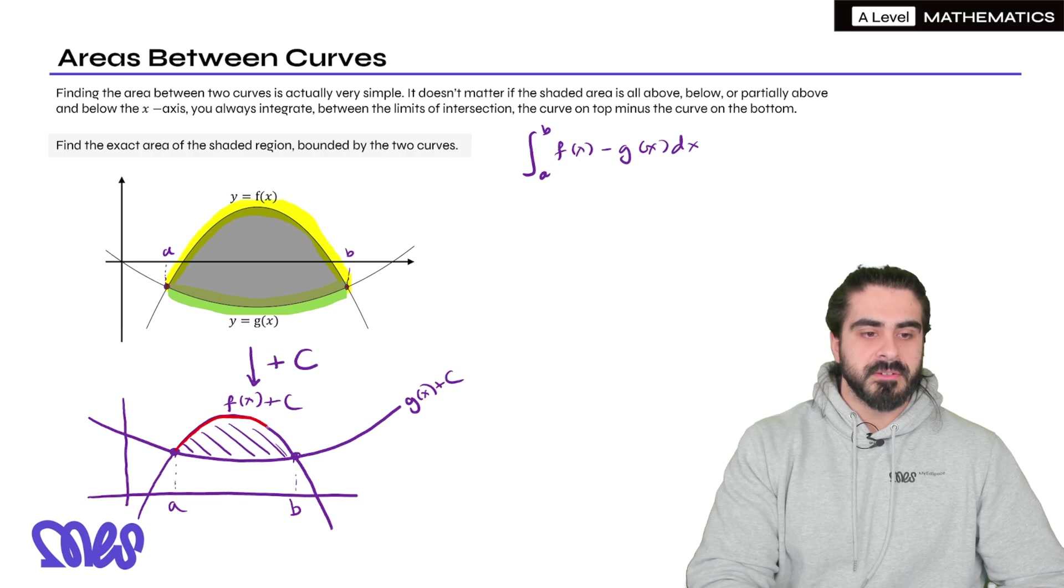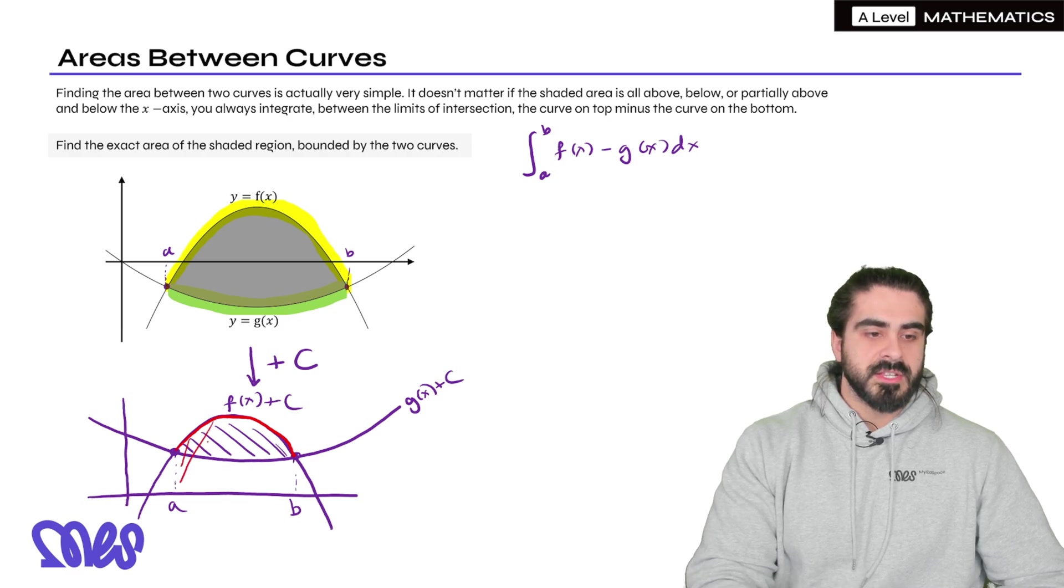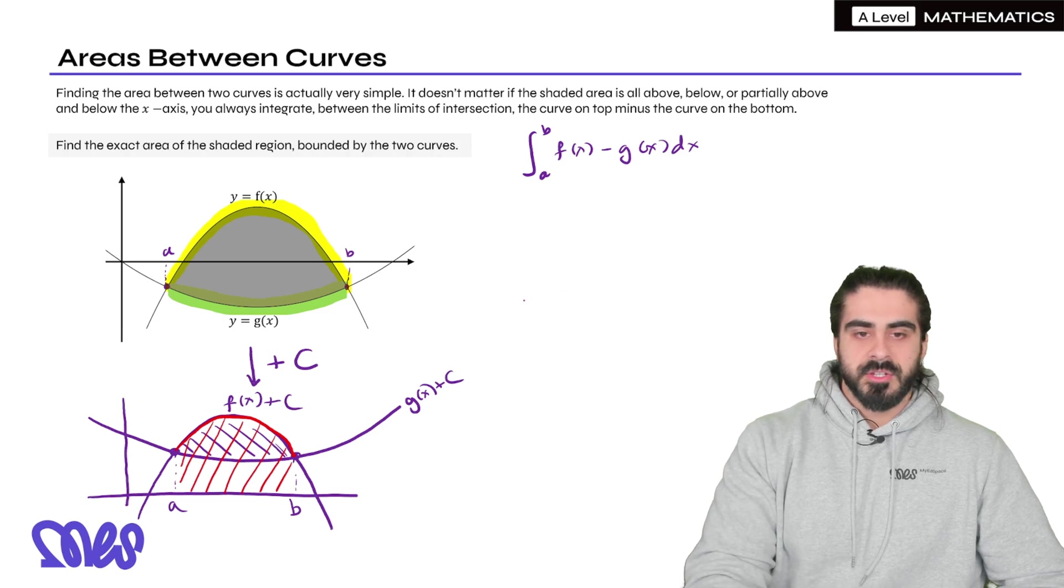The next thing we would do is we would find the area underneath the curve on the top. Now if you integrate f(x) + c between a and b, you would find this whole area. You would find this whole thing. So I'm gonna write that down.